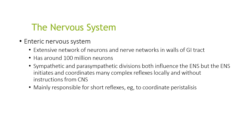The enteric nervous system has an extensive network of neurons and nerve networks in the walls of the GI tract, with around over 100 million neurons. The sympathetic and parasympathetic divisions both influence the ENS, but the ENS initiates and coordinates many complex reflexes locally and without instructions from the CNS. It is mainly responsible for short reflexes to control peristalsis.